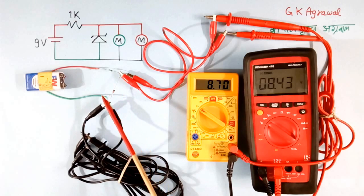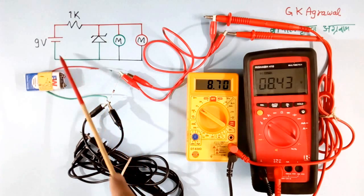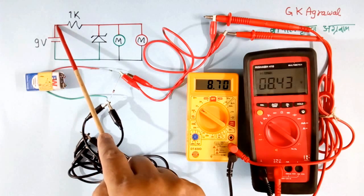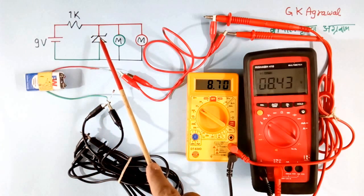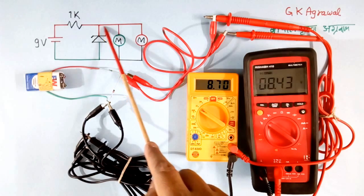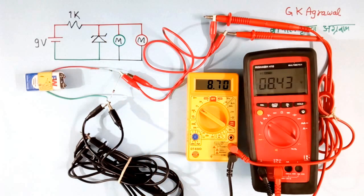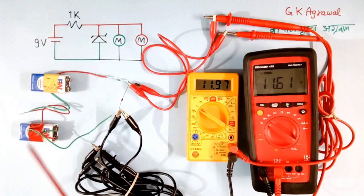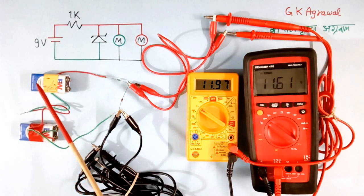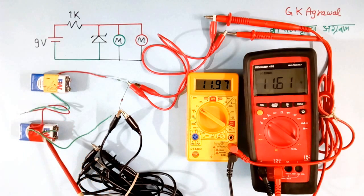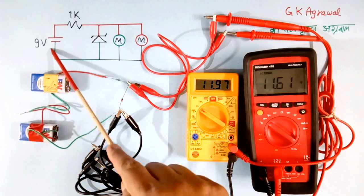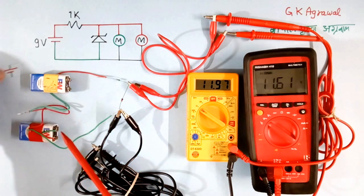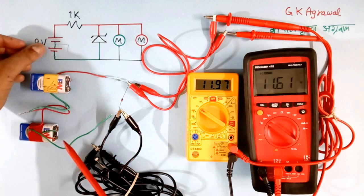So what I will do, I will add one more battery such that voltage here becomes more. Then we can see the reading of voltage across this Zener diode. Now I have connected one more battery in series. Now these two batteries are in series. Here I have connected one more battery. I will show you like this.